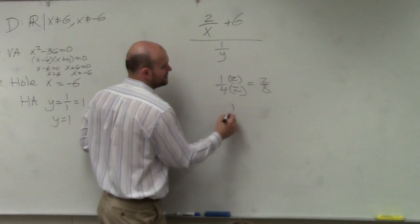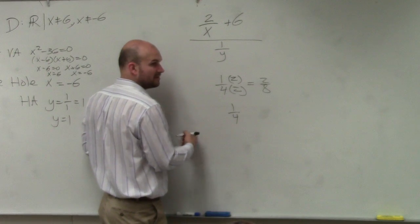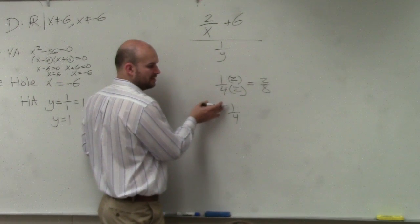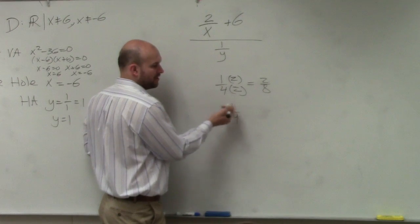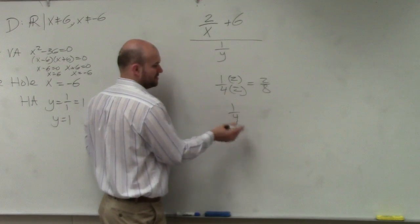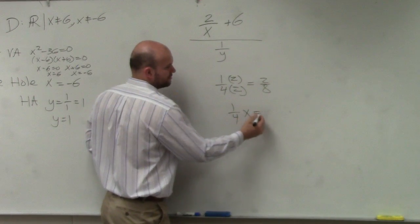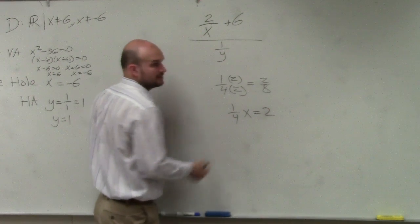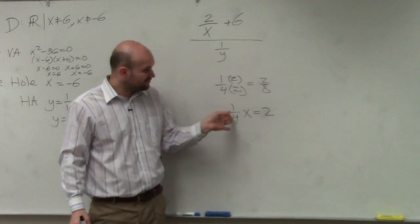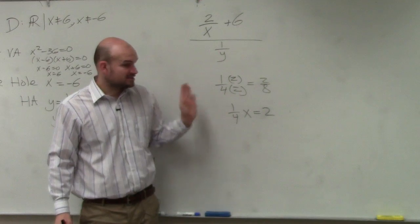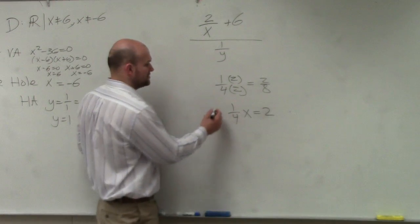So let's go and take care of 1 fourth. To get rid of this fraction 1 fourth, get rid of it, what we could basically do, or if we wanted to get rid of it, let's say we have 1 fourth x equals 2, right? To get rid of the fraction, as long as we multiply by 4 on both sides...